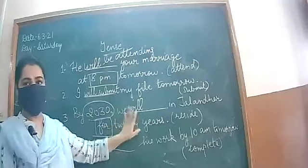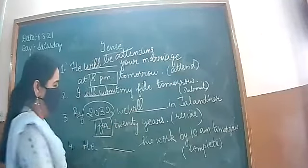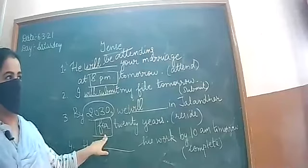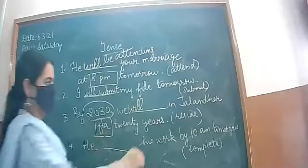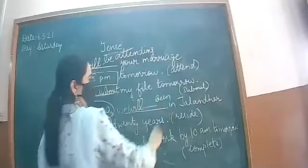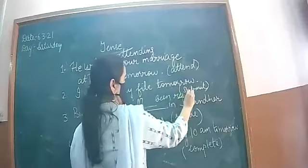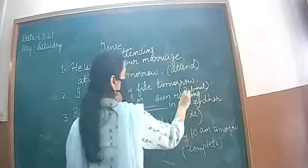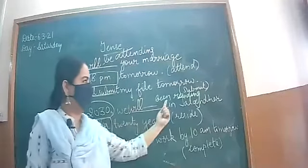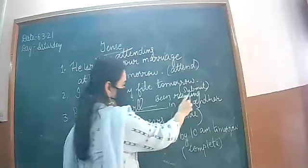Okay. Since for, been ING is must. Because this is future tense, will is needed. Now which word will join them? Have. Whenever you see since and for, been plus ING is a must. Since for, been ING.